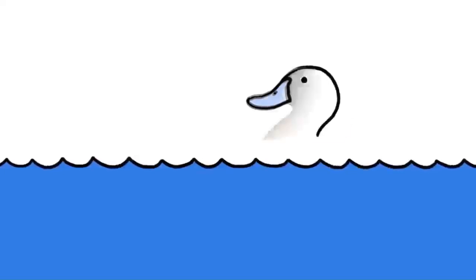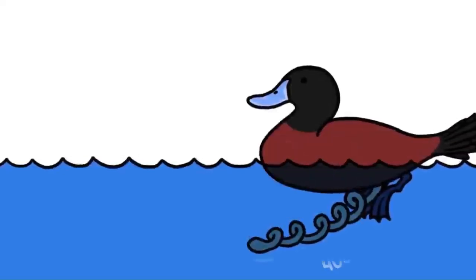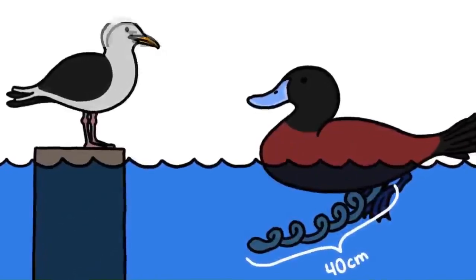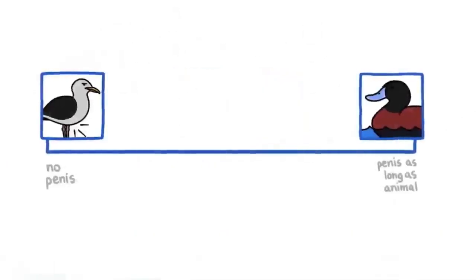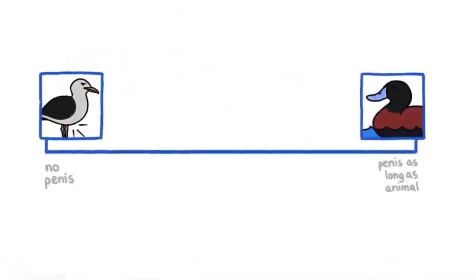The Argentine Lake duck's spiraling penis extends more than 16 inches. The seagull doesn't have a penis at all. For two animals with so much else in common, this is a pretty big spectrum. In fact, birds exhibit the biggest range in relative penis size of any class of vertebrates.